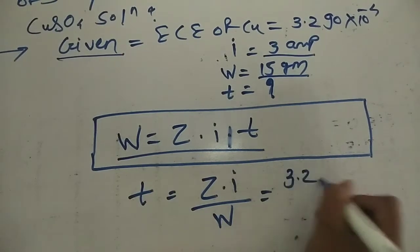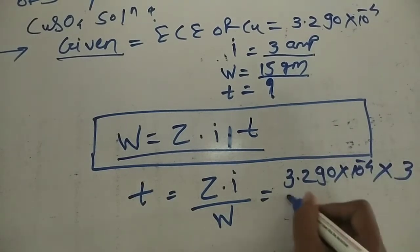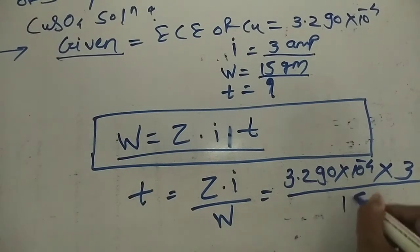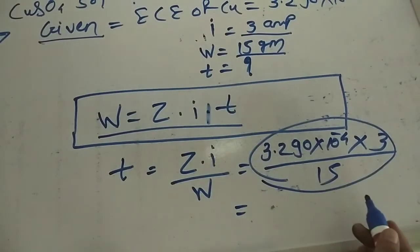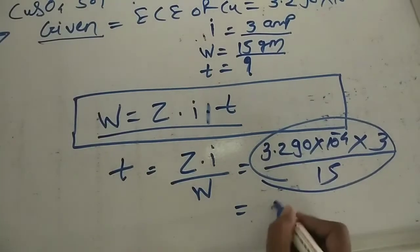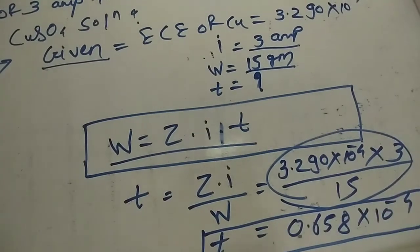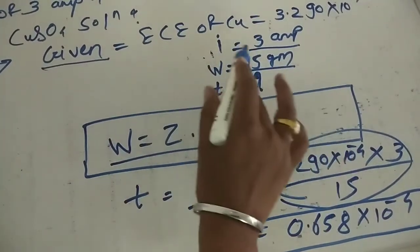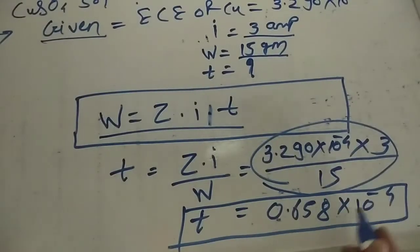Substituting the values: Z = 3.290 × 10⁻⁴, current I = 3 ampere, weight W = 15 gram. After calculating, we get 0.658 × 10⁻⁴ seconds. So the time required to deposit 15 gram of copper on the electrode is 0.658 × 10⁻⁴ seconds.